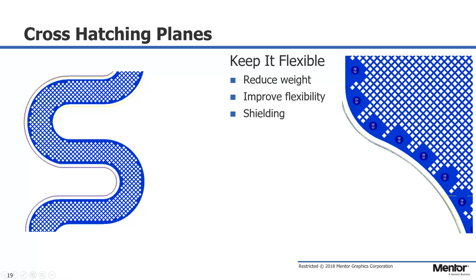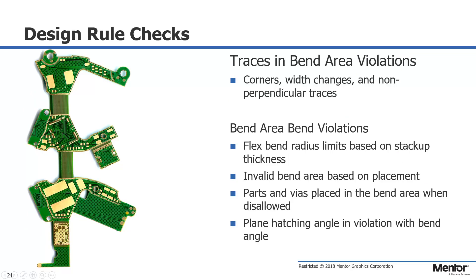DRC checks are available to check against bend area violations with traces, parts, vias, and plane hatching. The flex DRC checks against possible reliability issues that arise in bend areas.